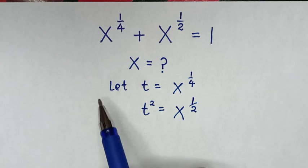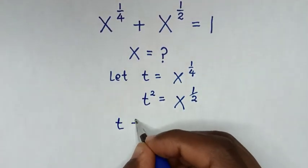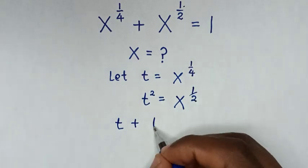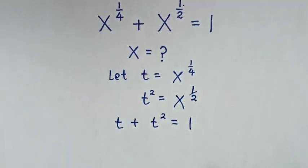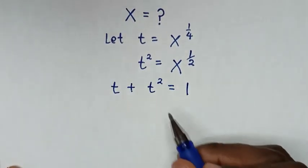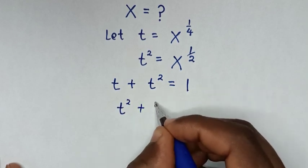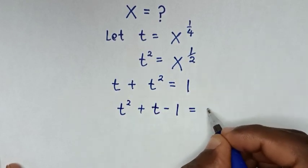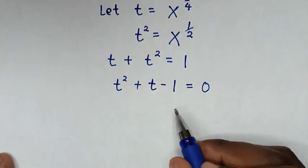Then our equation will be t plus t squared is equal to 1. We move 1 to this side, so it becomes t squared plus t minus 1 is equal to 0. From this quadratic equation, we will solve using the quadratic formula.